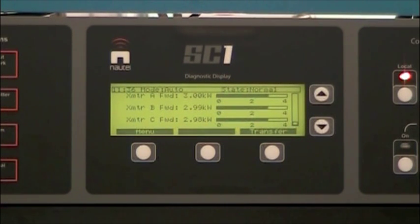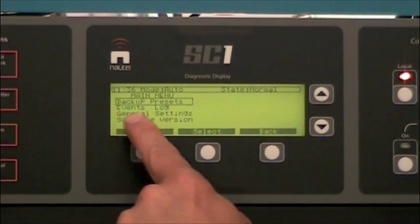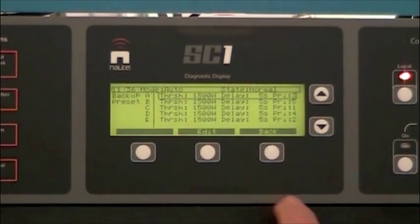With the SC1 we're now going to look at how we set up the thresholds and the priority selection in the menu. So from the top menu you press the menu button and you wish to select backup presets. Select that.